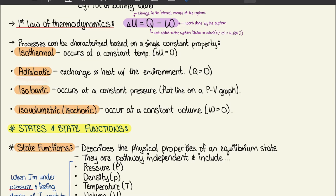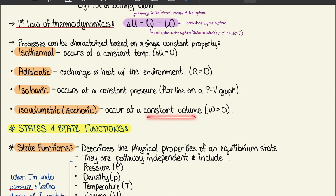For an adiabatic process, no heat is exchanged with the environment, so q = 0. An isobaric process occurs at constant pressure — on a pressure-volume graph you'll see a flat horizontal line. An isovolumetric process occurs at constant volume, so work w = 0.